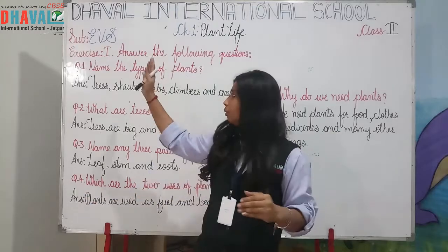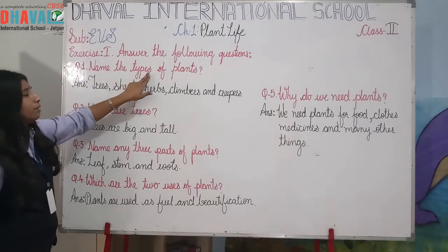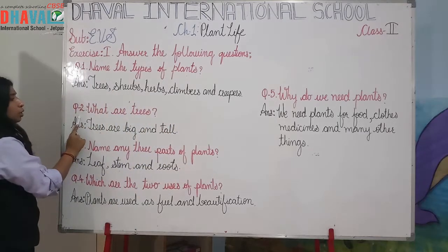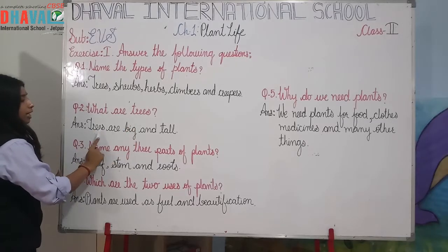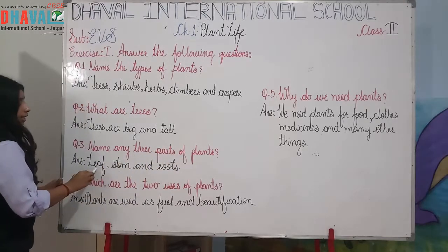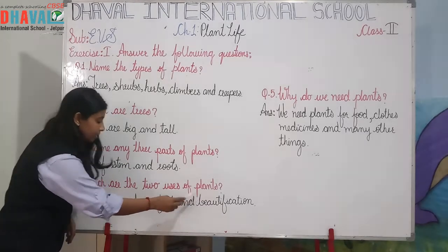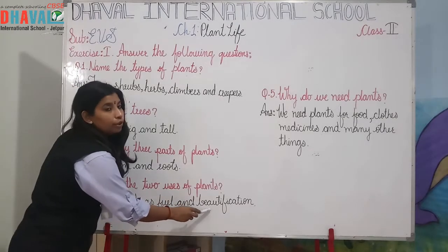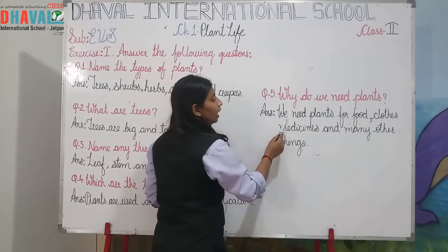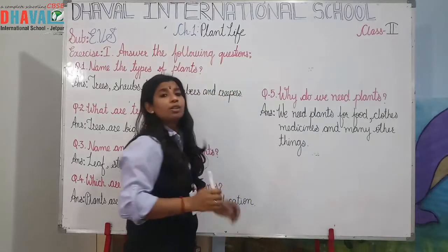These are the 5 questions. Let me repeat them. Question 1: name the types of plants — trees, shrubs, hops, climbers and creepers. Question 2: what are trees? — Trees are big and tall. Question 3: name any 3 parts of plants — leaf, stem and roots. Question 4: which are the 2 uses of plants? — Plants are used as fuel and beautification. Question 5: why do we need plants? — We need plants for food, clothes, medicines and many other things.